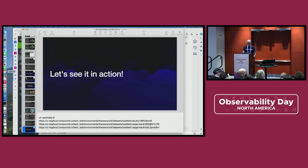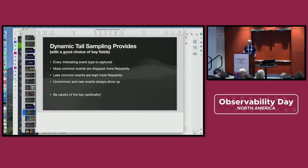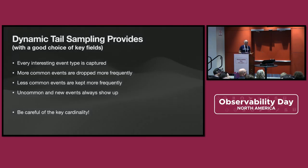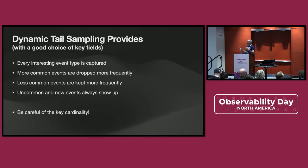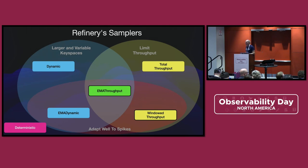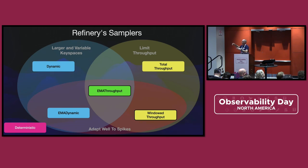Generally, what we're doing with dynamic tail sampling is catching the most interesting data types. The more common events are dropped more frequently; the less common events are kept more frequently; and anything new or uncommon is guaranteed to show up. But if your cardinality is too high, it's a problem. We have a bunch of different sampler types in Refinery that do dynamic sampling — they combine current data with past data in different ways. We have an exponential moving average sampler, samplers designed to limit throughput where you can say I want 10,000 spans per minute, and a windowed throughput sampler donated by a third party that does a different form of moving average.